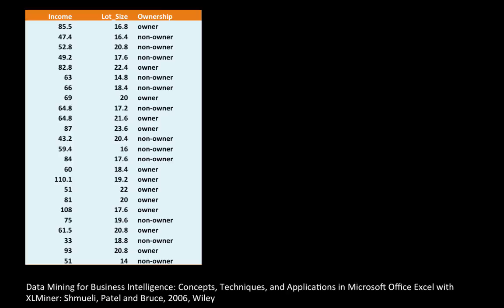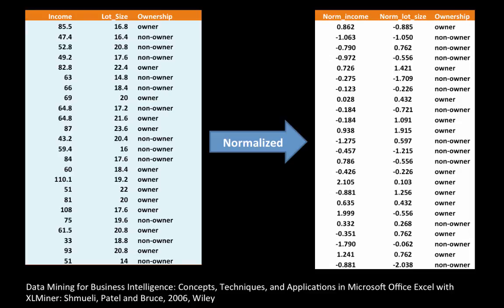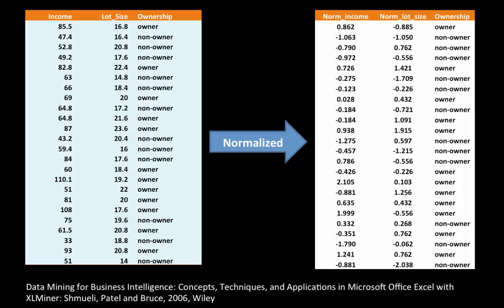There are two attributes — a simplistic assumption just for exposition. The first thing we do is normalize the data. We normalize the predictors because the two predictors were incommensurate — incomes were much higher than lot sizes even though incomes were shown in thousands of dollars. It would tend to dominate, so we normalize both incomes and lot sizes so that they are commensurate. That's step number one.